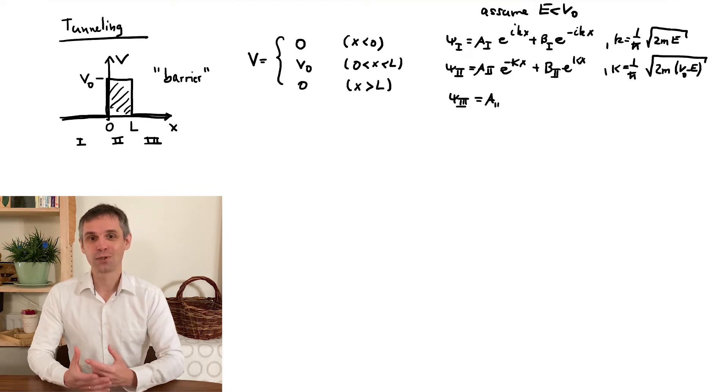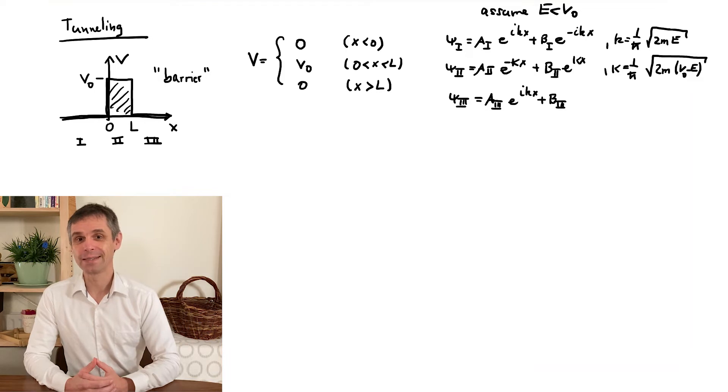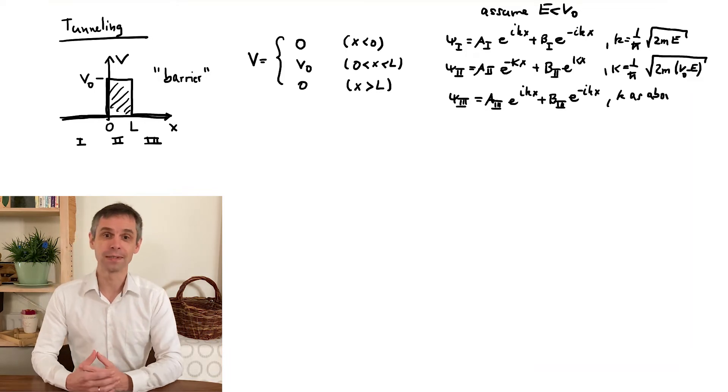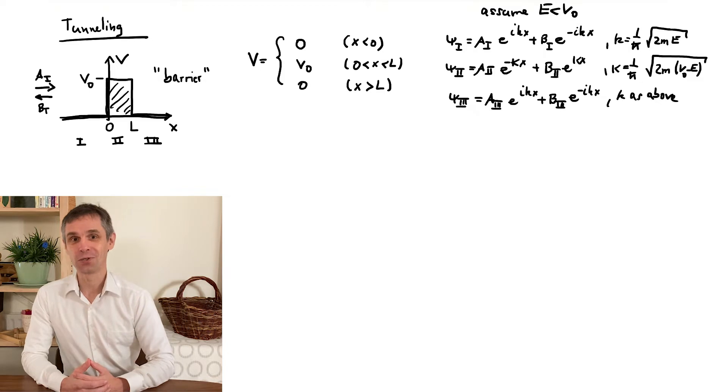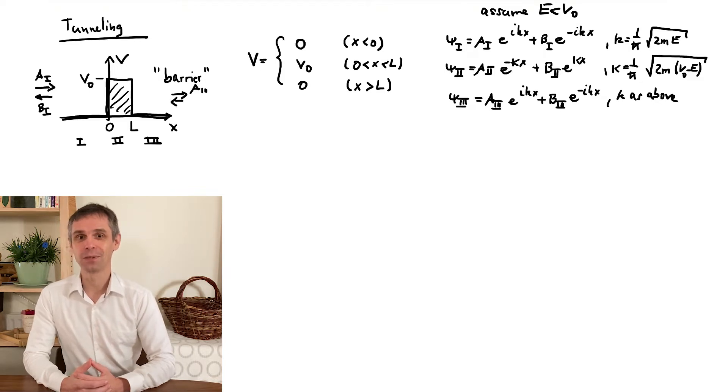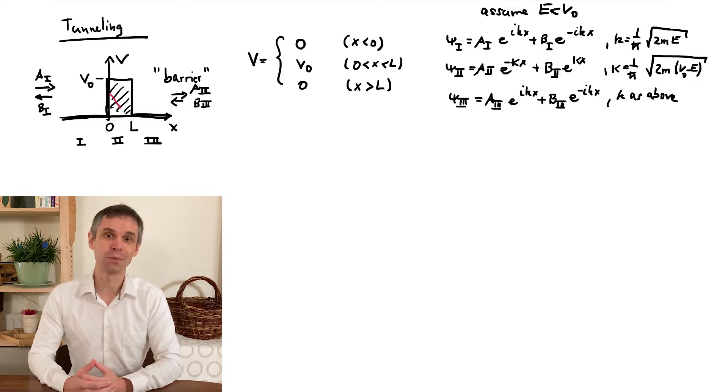The interpretation of the coefficients in regions 1 and 3 are just the same as we discussed in the previous example, so can be used to specify sources of incoming particles and then work out the transmission and reflection probabilities.